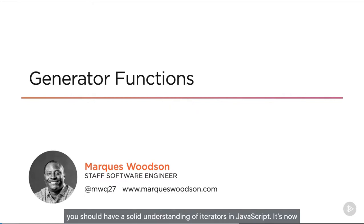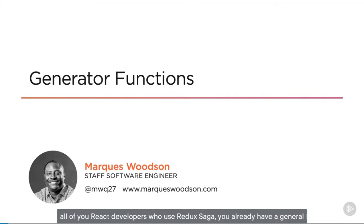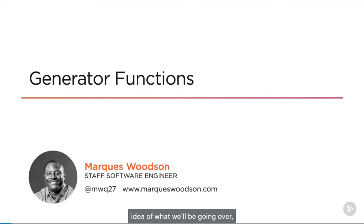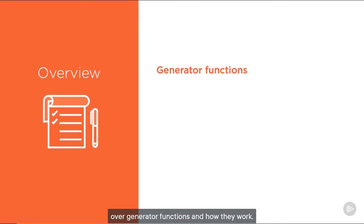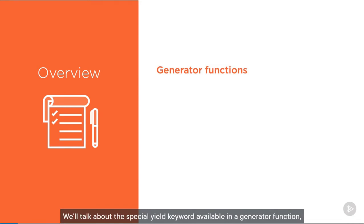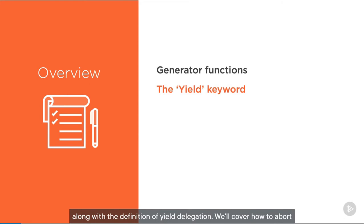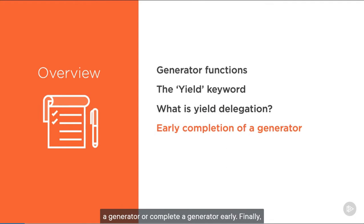At this point in the course, you should have a solid understanding of iterators in JavaScript. It's now time to learn about a new type of function that produces an iterator. For React developers who use Redux Saga, you already have a general idea of what we'll be going over. We'll talk about the special yield keyword available in a generator function, along with the definition of yield delegation. We'll cover how to abort a generator or complete a generator early.